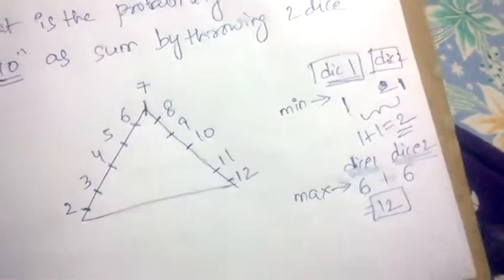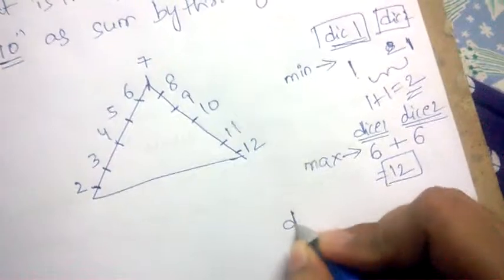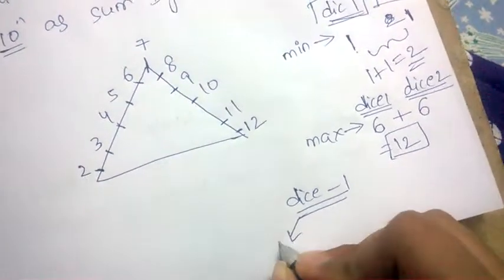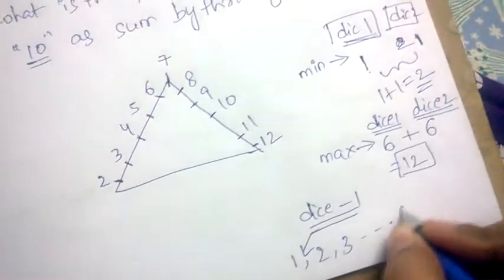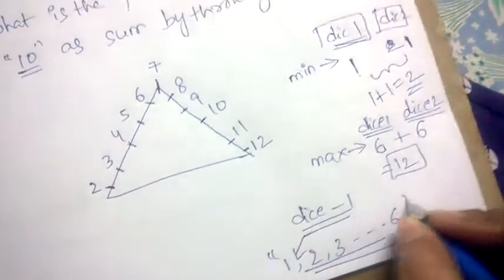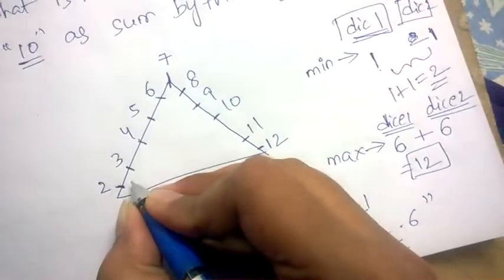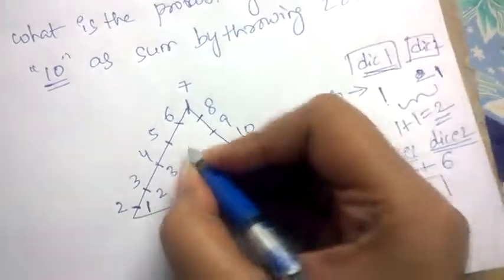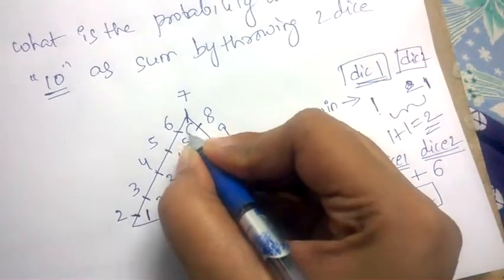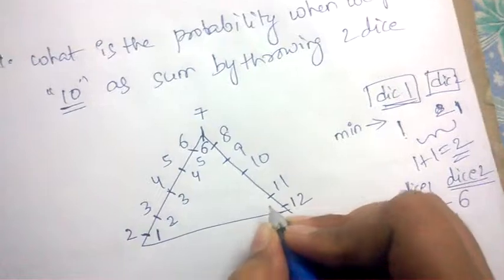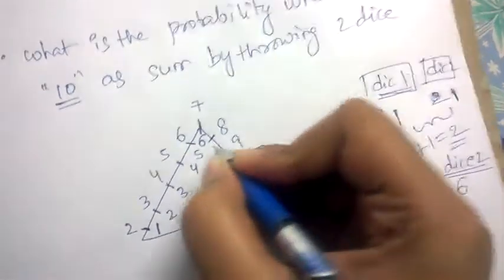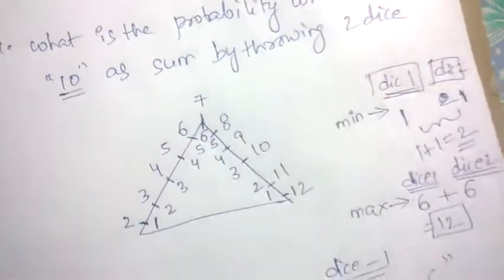Now, considering dice one: the possible outcomes are one, two, three, four, five, six. When you throw dice one you get six possibilities. Write the numbers one, two, three, four, five, six for dice one. For dice two, do the same — one, two, three, four, five, six.